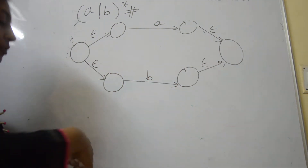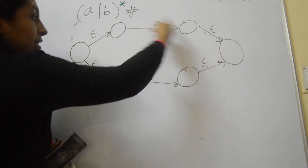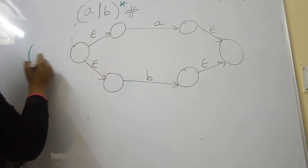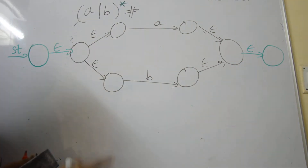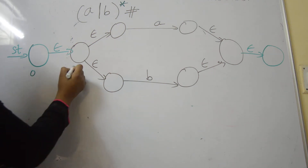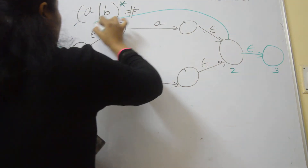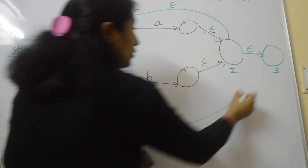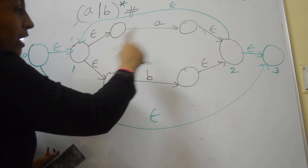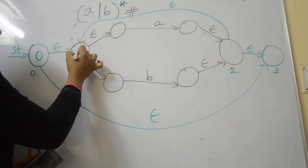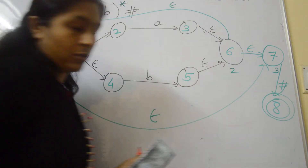This is the diagram for (A∪B)*. Remember the previous construct: state 0, 1, 2, and 3 for Kleene closure. Introduce two more null transitions — from state 2 to state 1, and from state 0 to state 3. This completes the diagram of (A∪B)*. At the end, on hash, we have accepting state 8. The state numbering is 0, 1, 2, 3, 4, 5, 6, 7, and the accepting state is 8.